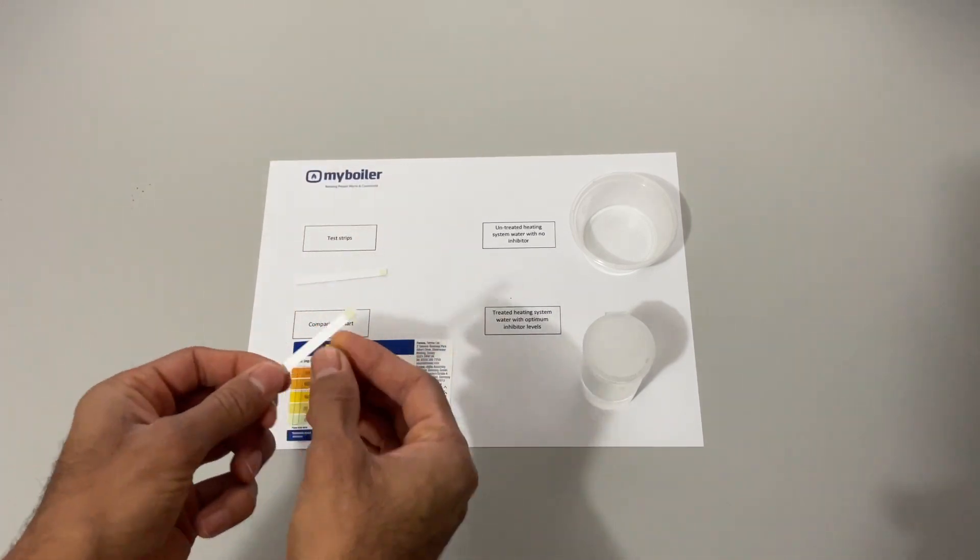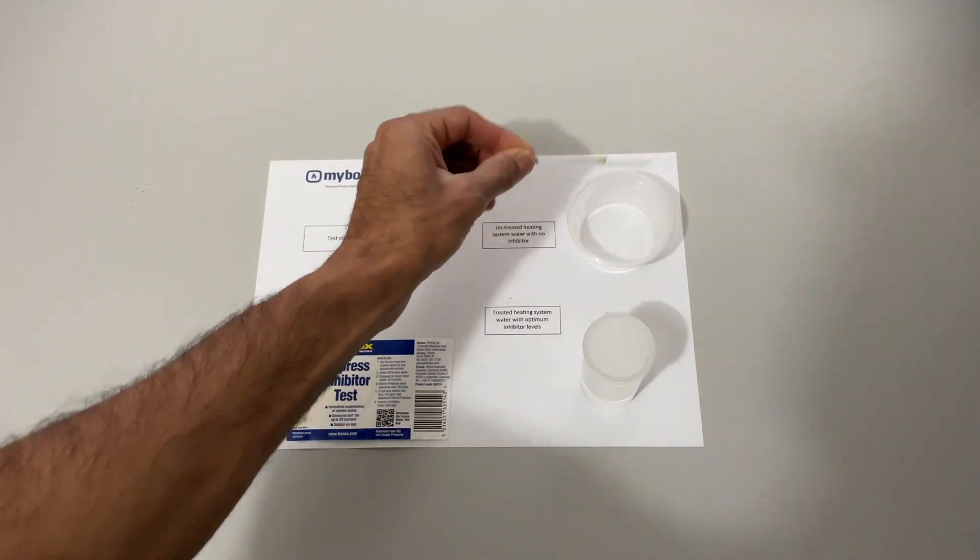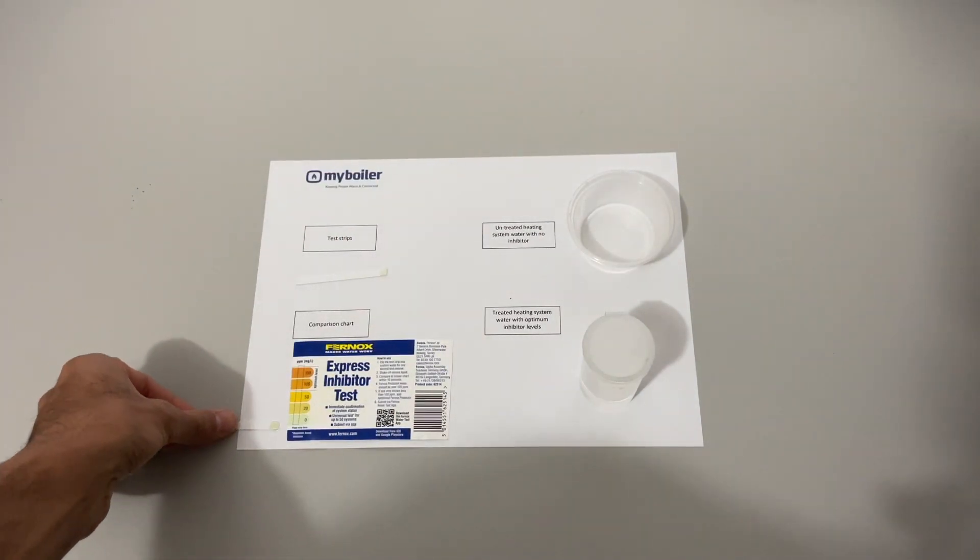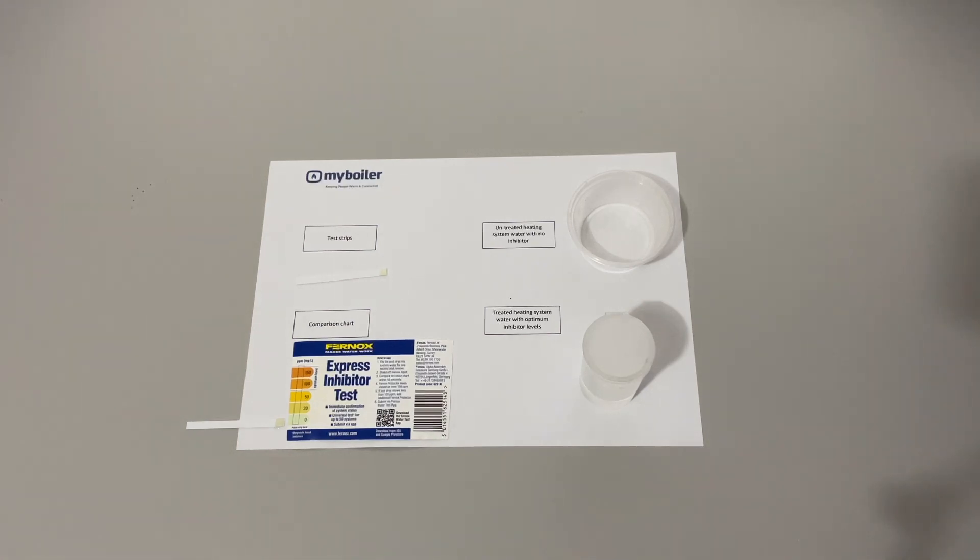Light green indicates no inhibitor or low inhibitor. To show you a correctly treated heating system, the test strip will be orange or darker.